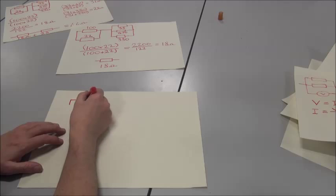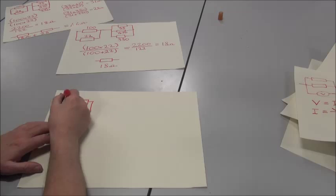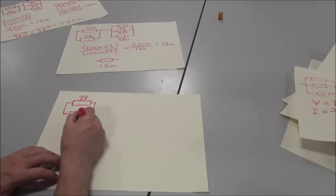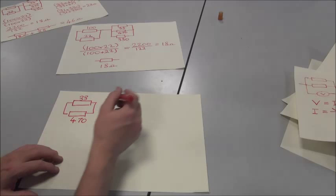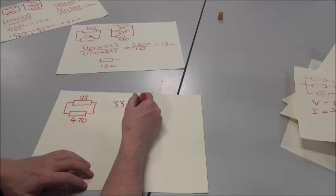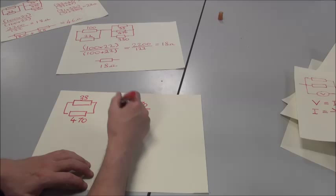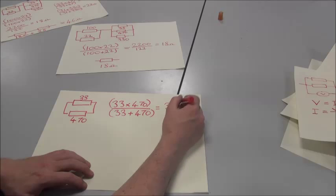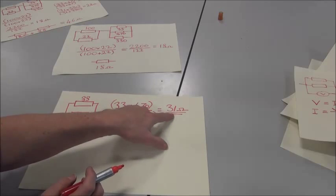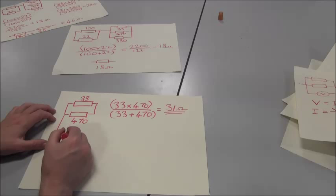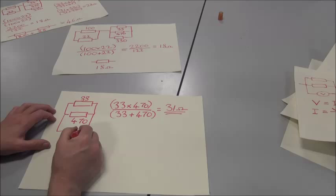So we will take the first two resistors at the top, and they are 33 and 470. We do product over sum with that. I've already done the calculations just to save time, but I write them out anyway. When you do that sum, you end up with 31 ohms. We take this 31 ohms, which represents these two resistors, and we use it to product over sum with the third resistor in the bank.